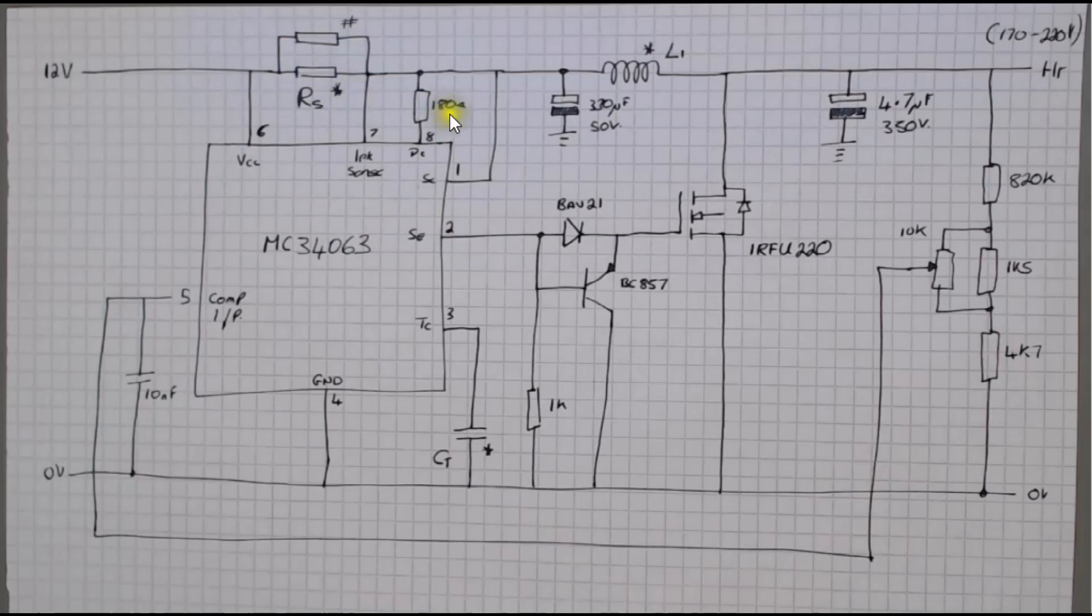The 180 ohm resistor is there because in the circuit when you're doing a step up circuit it shows 180 ohms there. Whether you need it I don't know because we've got an external FET driving the system so you may not need it but it's there.